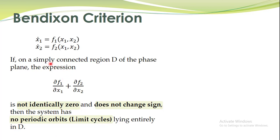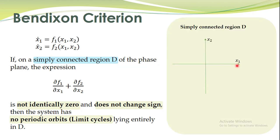Here is one more new term: simply connected region of the phase plane. We have the phase plane with axes x1 and x2. Generally, we are not interested in the entire state space — the entire phase plane. Rather, we are interested in a subset of this phase plane. That subset is called a region or domain.